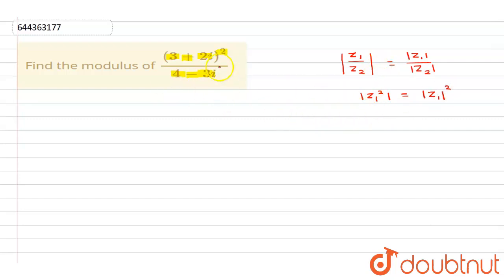Now use this result. In this we will get modulus of this expression is equal to modulus of (3 + 2i) whole squared divided by mod of (4 - 3i). This is what we get.